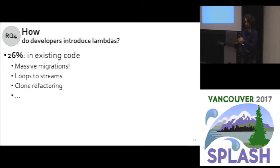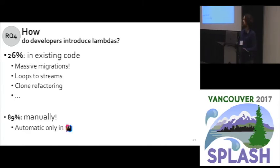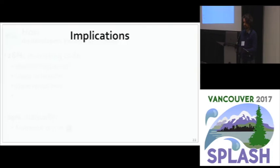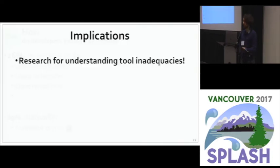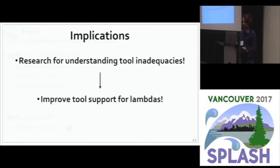There are other reasons developers create lambda expressions in existing code. When we asked developers how they create lambdas, 89% said they do it without any tool — the only tool used for automatic creation was IntelliJ. This was not surprising and supports our previous work. This is a call for research: what's wrong with current tools for dealing with lambda expressions? People are underusing them, and better research could lead to better tool support.